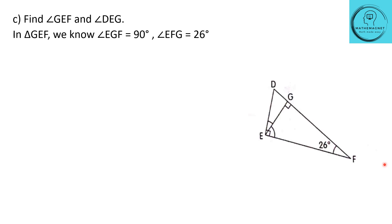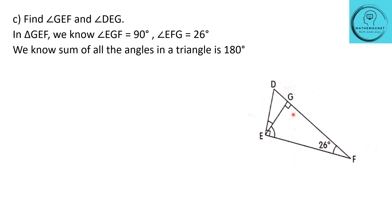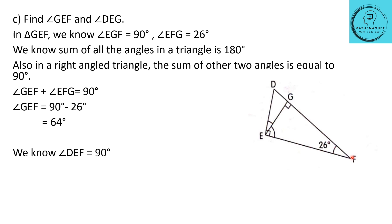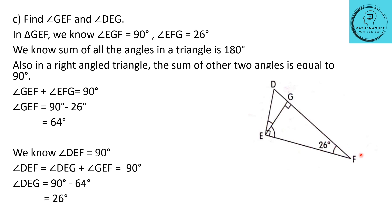The next question C: find angle GEF and angle DEG. In triangle GEF, angle EGF is 90 degrees and angle EFG is 26 degrees. The sum of all angles in a triangle is 180 degrees, so angle GEF plus angle EFG equals 90 degrees, giving angle GEF equal to 90 minus 26, which is 64 degrees. For angle DEG: since angle DEF is 90 degrees and angle DEF equals angle DEG plus angle GEF, we get angle DEG equal to 90 minus 64, which is 26 degrees.